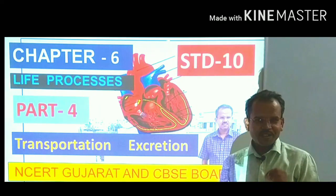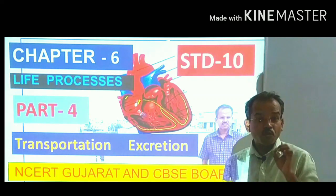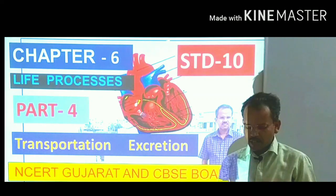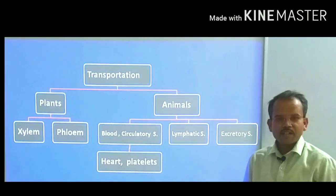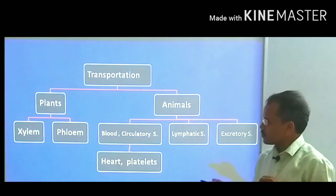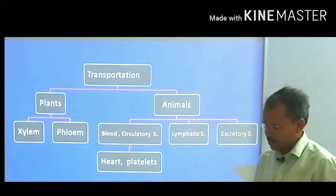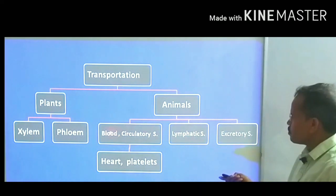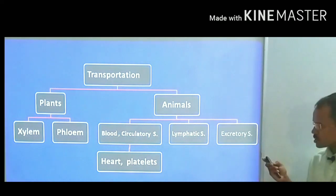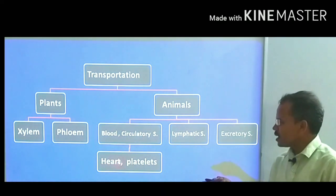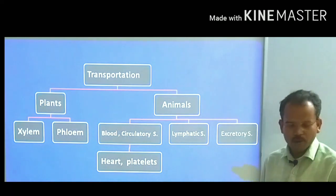Hello, dear students. Today we are going to learn lesson number six, and this is the fourth video, in which we learn transportation in plants and animals. In plants, xylem and phloem; in animals, blood circulatory system, lymphatic system, and excretory system. In the blood circulatory system, we will learn about the heart and platelets in detail.